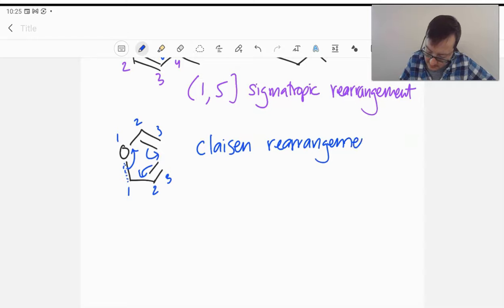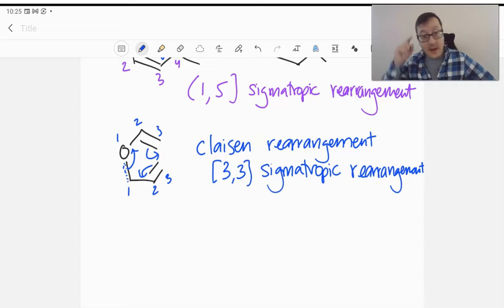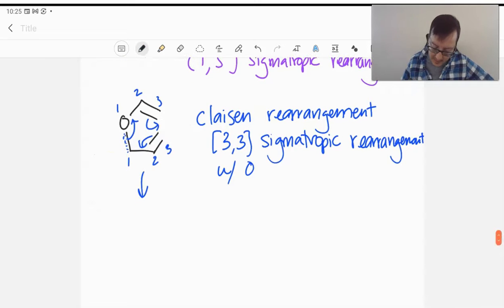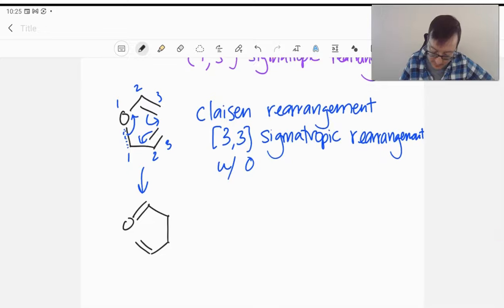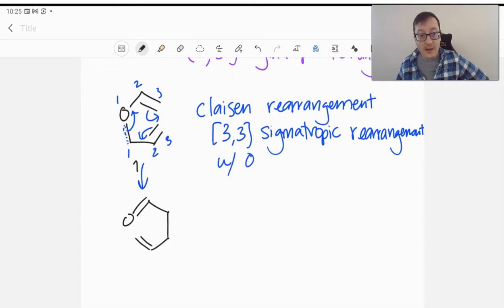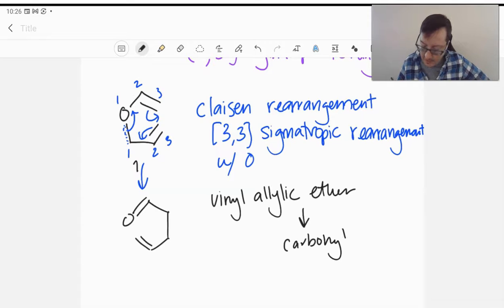This is a Claisen rearrangement, a 3,3-sigmatropic rearrangement that involves an oxygen. When this does rearrange, we see that we now have something that we didn't before, a different functional group. We started with an ether, and we ended up with a carbonyl. Carbonyls are inherently much more stable than ethers are. As a result, we will see that this reaction much favors forming the product than the reactant. So we started with a vinyl allylic ether going to a carbonyl.